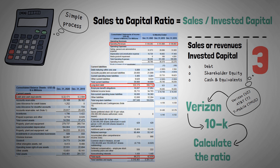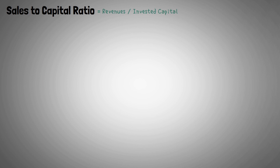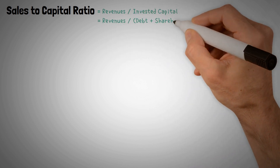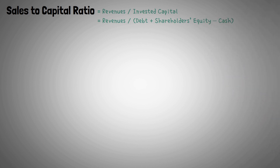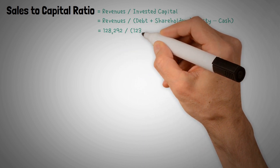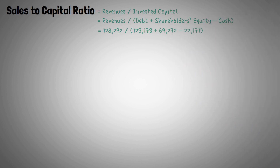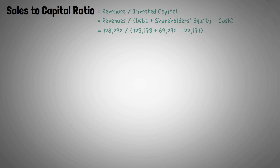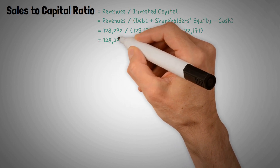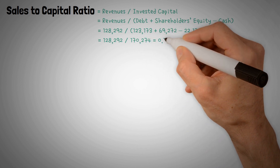Now, plugging those numbers into the ratio — Sales-to-Capital Ratio equals revenues divided by debt plus shareholders' equity minus cash — Sales-to-Capital Ratio equals $128,292 divided by $123,173 plus $69,272, giving us $128,292 divided by $170,274, equaling $0.75.